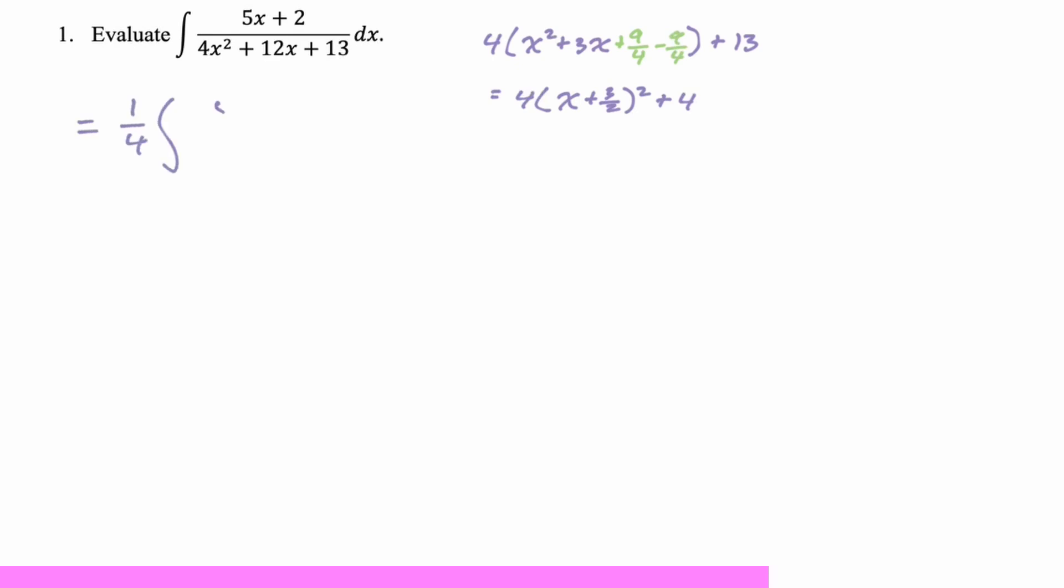I'm going to rewrite it as 1 plus the quantity because I'm thinking arctan is involved. And I always like arctan to look like 1 over 1 plus u squared, ideally, which we're working our way toward.